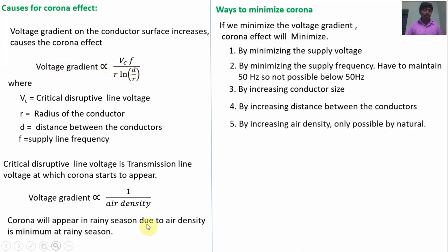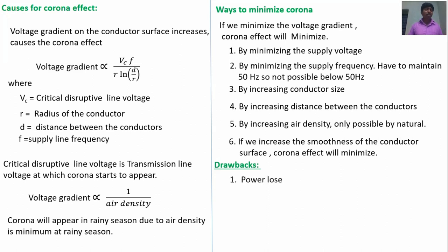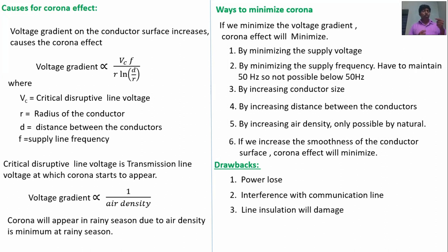By increasing air density we can minimize the voltage gradient, but this is only possible naturally. Also, increasing the smoothness of the conductor surface means the electrons will not try to escape from the surface. These are the ways to minimize corona effect. Now, drawbacks: in the power transmission line, electrons try to escape, so power loss will occur. Second, noise — if a communication line is near to the transmission line, interference will happen with the communication line. Third, line insulation may be damaged.